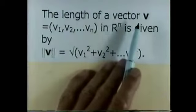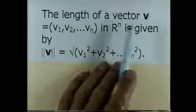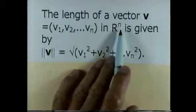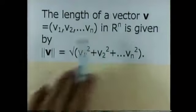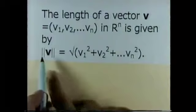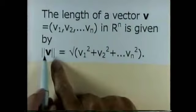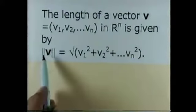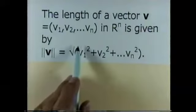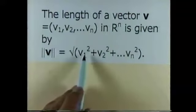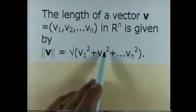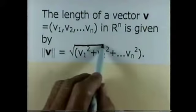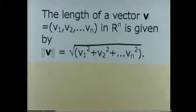The length of a vector v equal to v1, v2, out to vn in n-space is given by — this is the symbol for the length of v, also called the magnitude. So the magnitude of v is the square root of v-sub-1 squared plus v-sub-2 squared, out to and including v-sub-n squared.